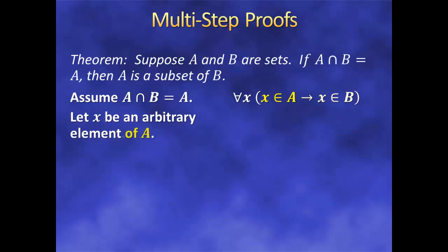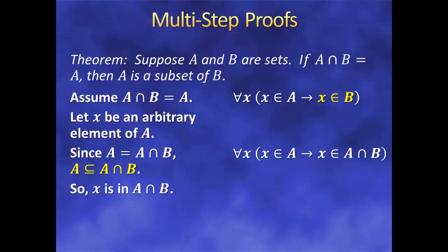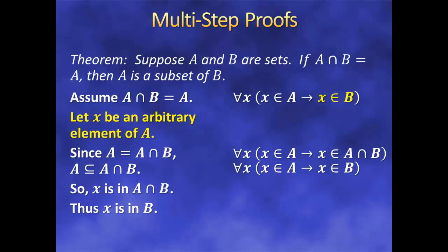So again, we'll use direct proof and assume x is an element of a. We've now narrowed down the x's we're looking at — we just care about the ones in a, rather than all the ones in the universal set. Now we just need to prove that x is in b. Well, we just assumed a moment ago that the intersection of a and b is equal to a. This implies that a is a subset of a intersect b. Remember, saying two sets are equal means that each one is a subset of the other. So that means if x is in a, then x is in a intersect b, and part of our conditional says x is in b. But we already assumed x was an element of a. So by modus ponens, x must be in b, and our proof is complete.